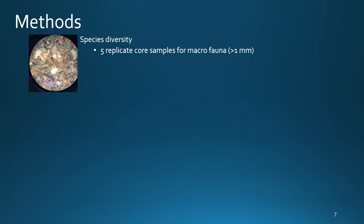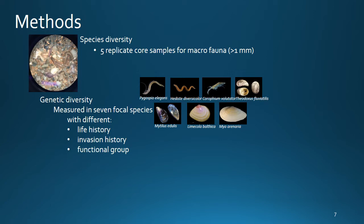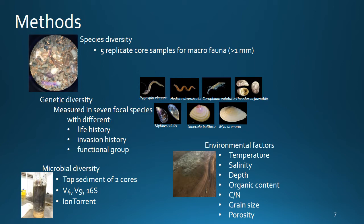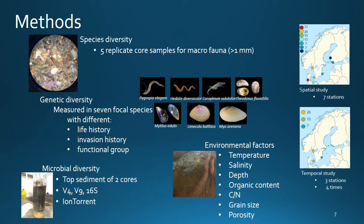To assess all these correlations, you need data. What I did was collect species diversity data using benthic macrofauna. Genetic diversity was measured in seven different species with different life history, invasion history, and within different functional groups. I also measured microbial diversity in the sediments and an array of different environmental factors. This was collected on a spatial scale with seven stations distributed along the salinity gradient in the Baltic Sea, and on a temporal scale at three stations revisited four times over a full year to capture seasonal changes.